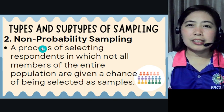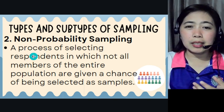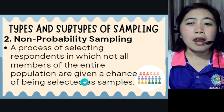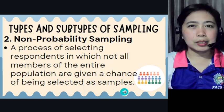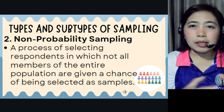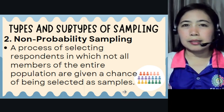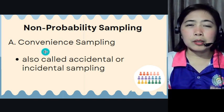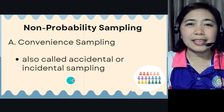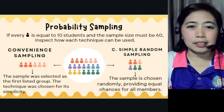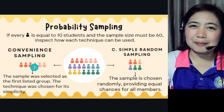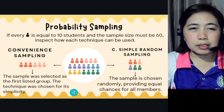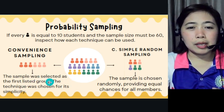Another type is non-probability sampling. For non-probability sampling, it is a process of selecting respondents in which not all members of the entire population are given a chance of being selected as samples — unlike probability sampling where everyone has a chance. Under non-probability, we have convenience sampling, also called accidental or incidental sampling. The sample was selected as the first listed group; the technique is chosen for its simplicity.